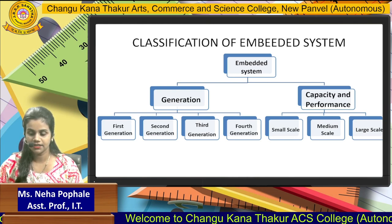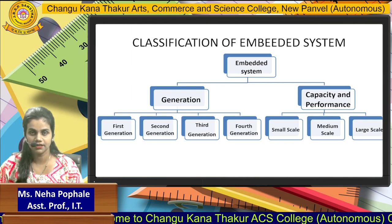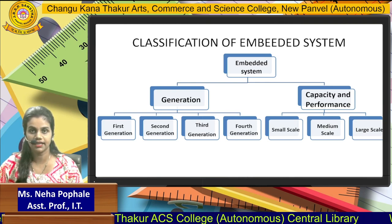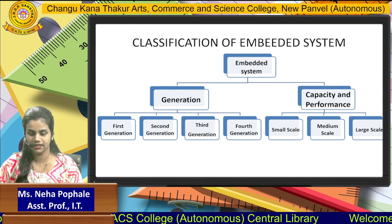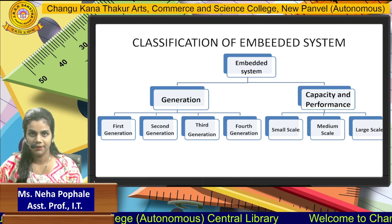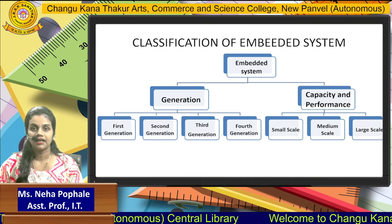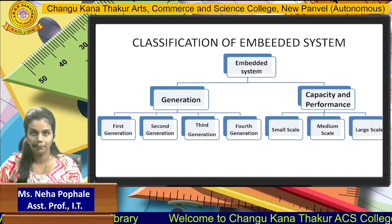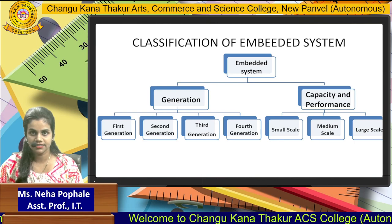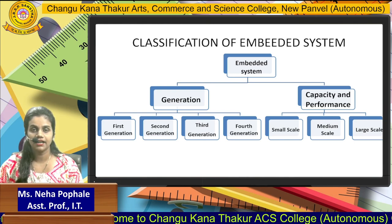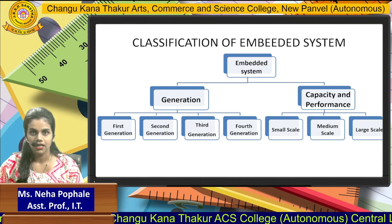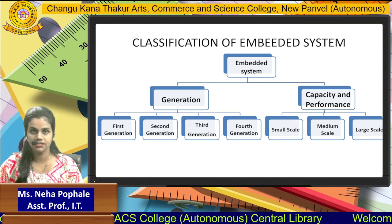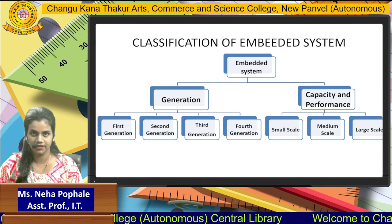Talking about the capacity and performance of Embedded Systems, they are classified into three scales: small scale, medium scale, and large scale. In the small scale Embedded System, the hardware connection is not complex and is easy to understand. Performance need not be critical. Examples include remote control cars and smartwatches.